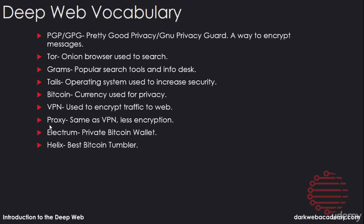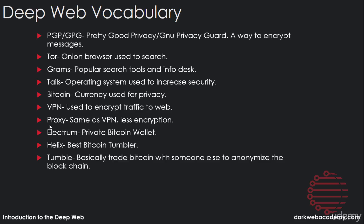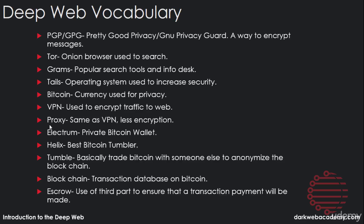We have Helix, which was a Bitcoin tumbler and the best one out there. If you didn't know what tumbling was, tumbling is basically where you trade your Bitcoin with someone else's to anonymize the blockchain. And the blockchain, if you didn't know, is just a transaction database on Bitcoin. And then we had escrow, which is the use of a third party to ensure that a transaction payment will be made.